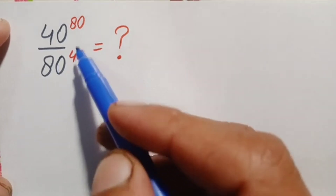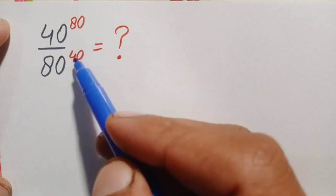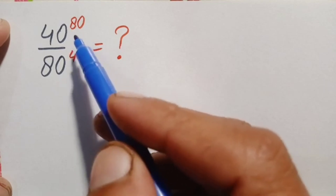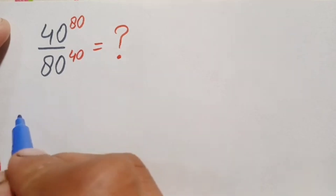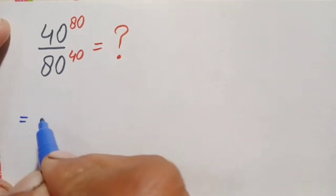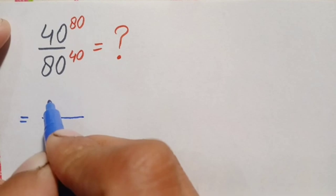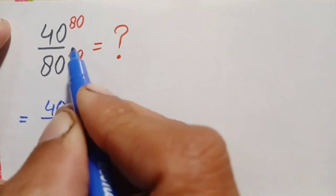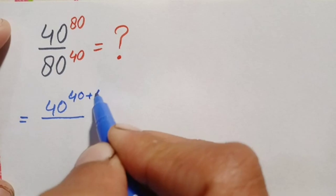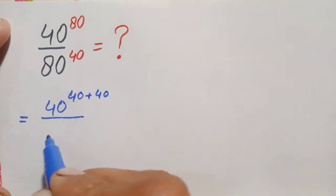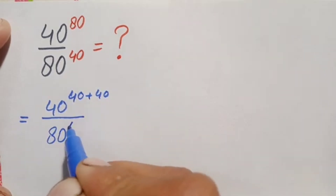In the first method, we make the power in both numerator and denominator the same — specifically, power 40. So we rewrite the numerator: 40 raised to power 80 can be written as 40 raised to power (40 + 40), divided by 80 raised to power 40.